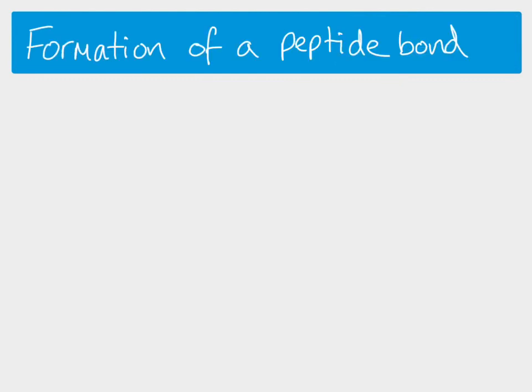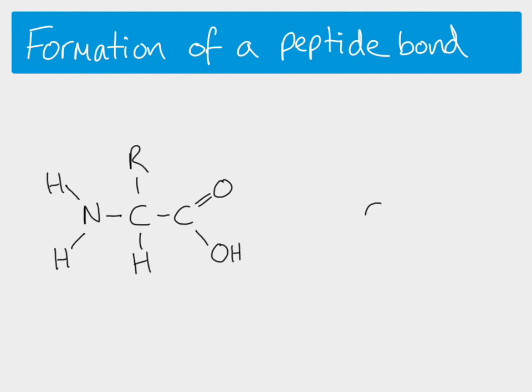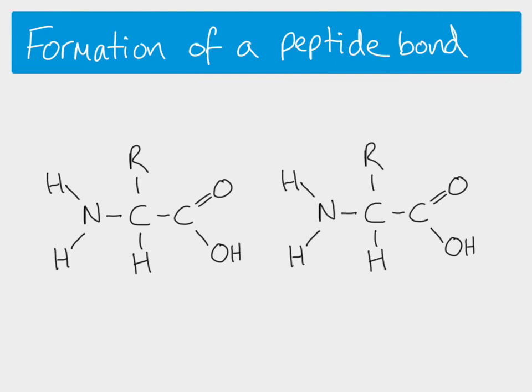Peptide bonds are the name of the bonds that join two amino acids together. So if we have one amino acid here and another one over here, and we want to join them, they will join together using a peptide bond and they will make a dipeptide because we would have two of them.